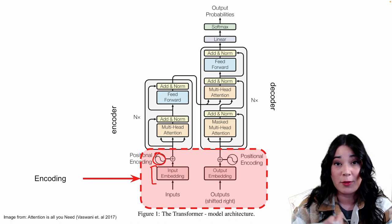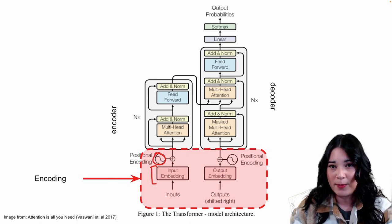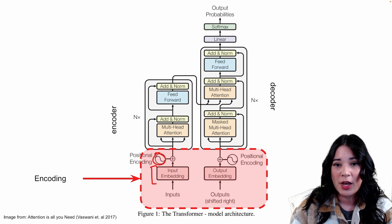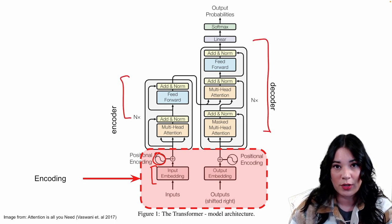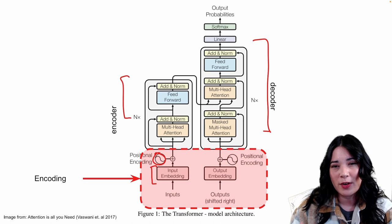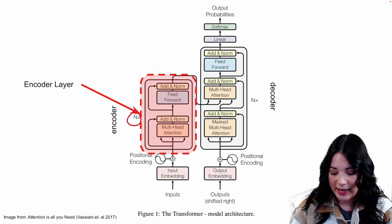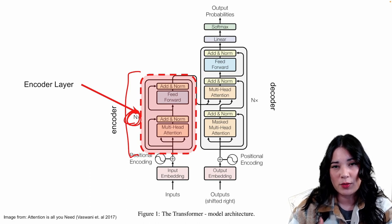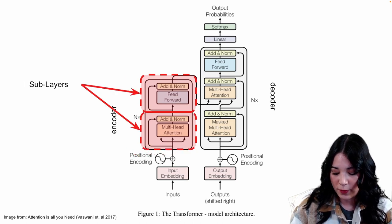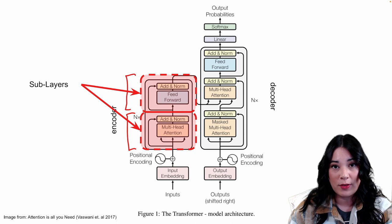Let's take a tour of the rest of the transformer architecture. This specific transformer, as laid out in the paper, is used for machine translation, which means it needs both an encoder and a decoder stack. You can use an encoder by itself or a decoder by itself, and at the very end we'll talk about some models that do just that. The encoder layer is actually a stack of n different encoder layers. Its job is to take in a sequence and create a hidden representation of that sequence. The encoder layer has two sub-layers: multi-headed attention, which we'll focus on today, and then a simple feed-forward layer.